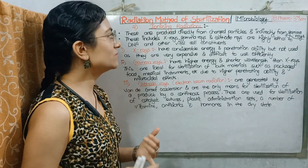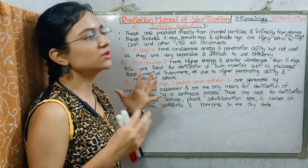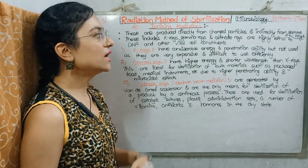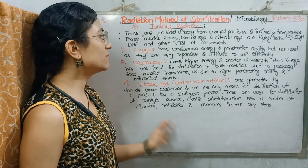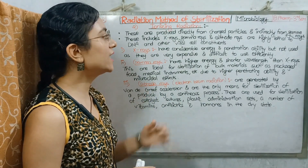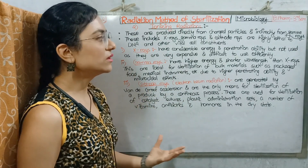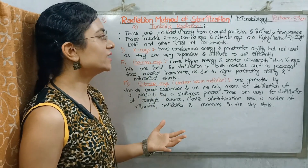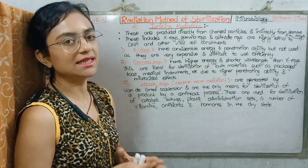The second method is Ionizing Radiation. These radiations are directly charged particles or indirectly produced by gamma rays. The rays include X-rays, gamma rays, and cathode rays, which have a highly lethal action on DNA and other vital cellular components.